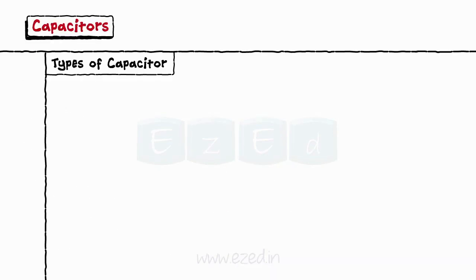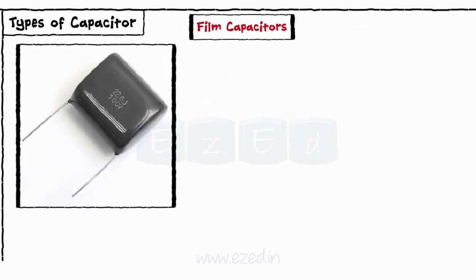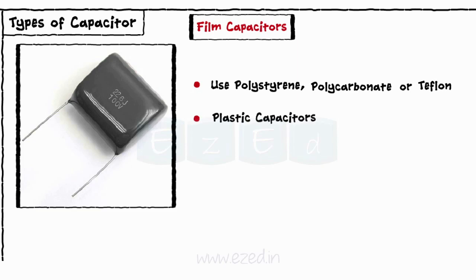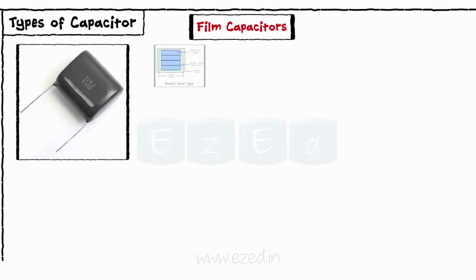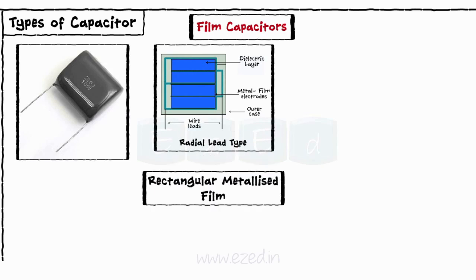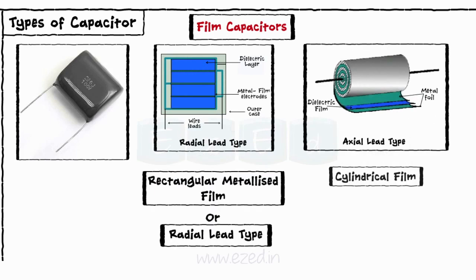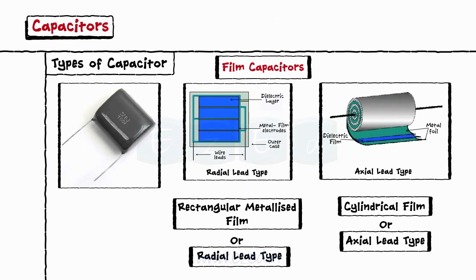The last type of capacitor that we will study is film capacitors. Film capacitors which use polystyrene, polycarbonate or teflon as their dielectrics are sometimes called plastic capacitors. Examples of film capacitors are the rectangular metalized film or radial lead type capacitor and cylindrical film or axial lead capacitor as shown.